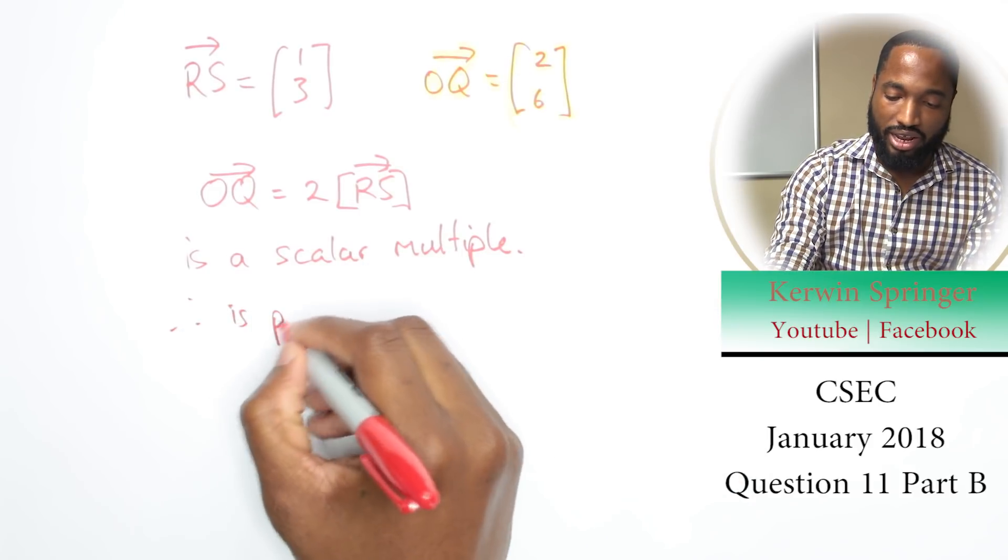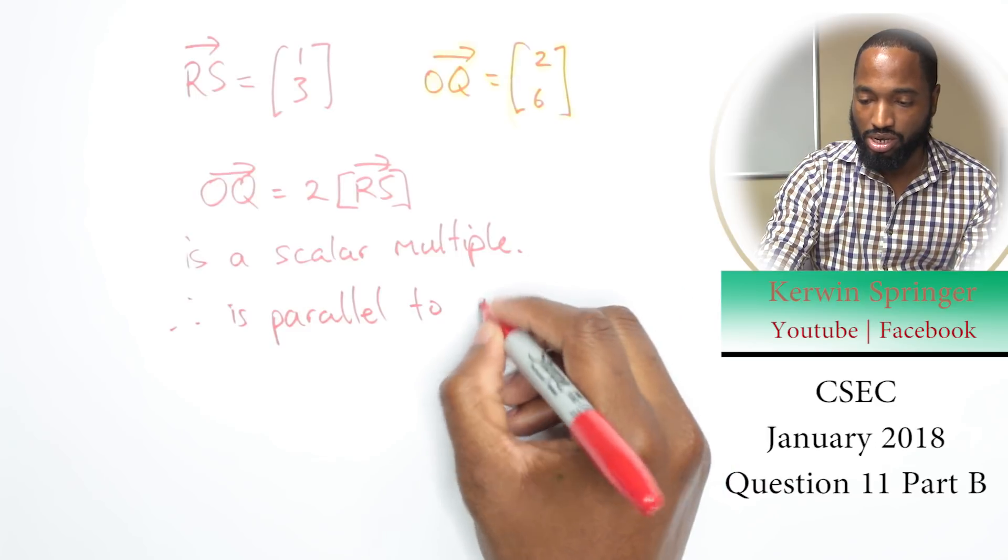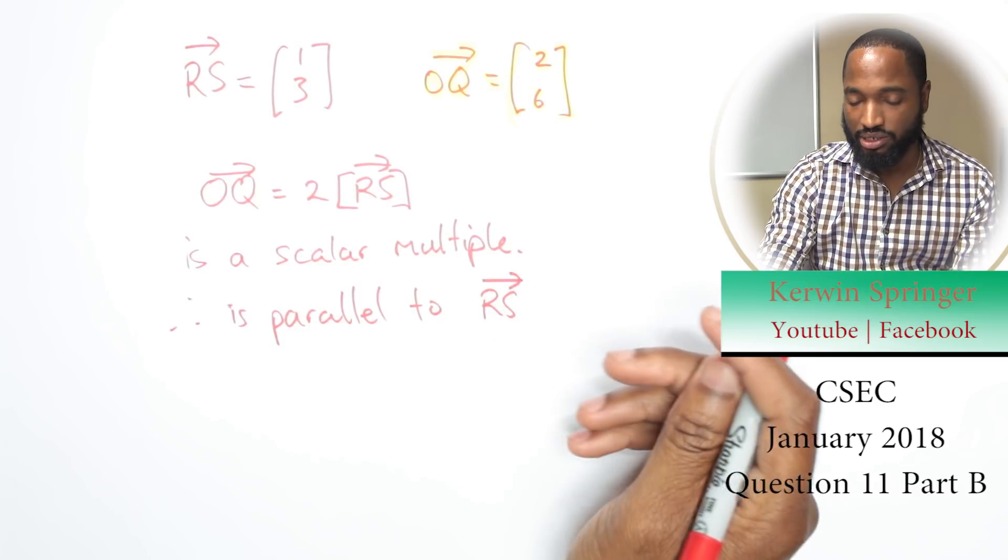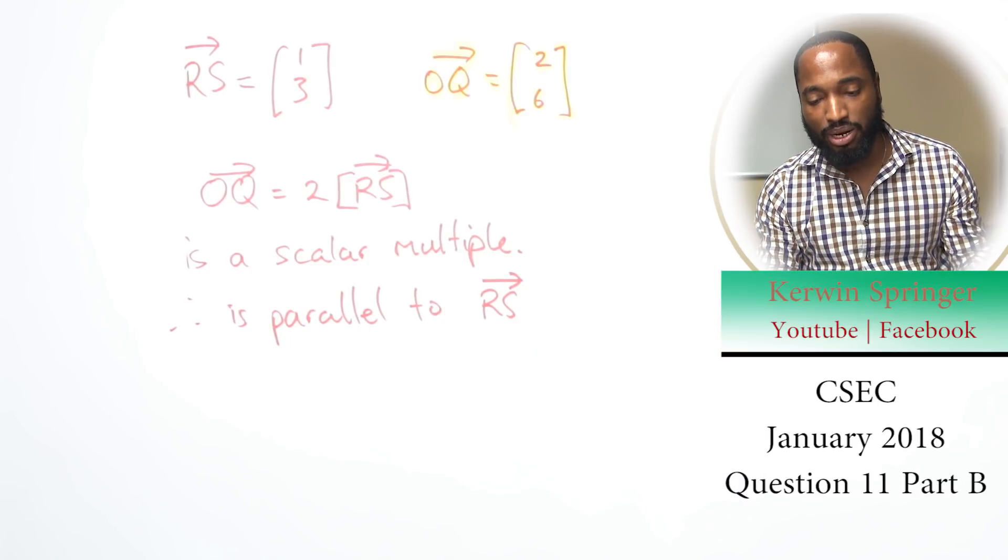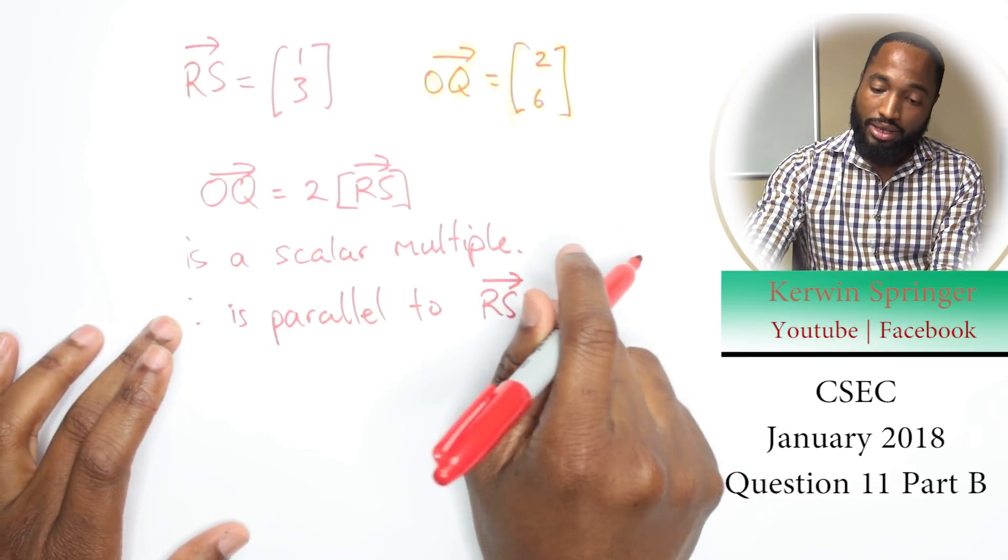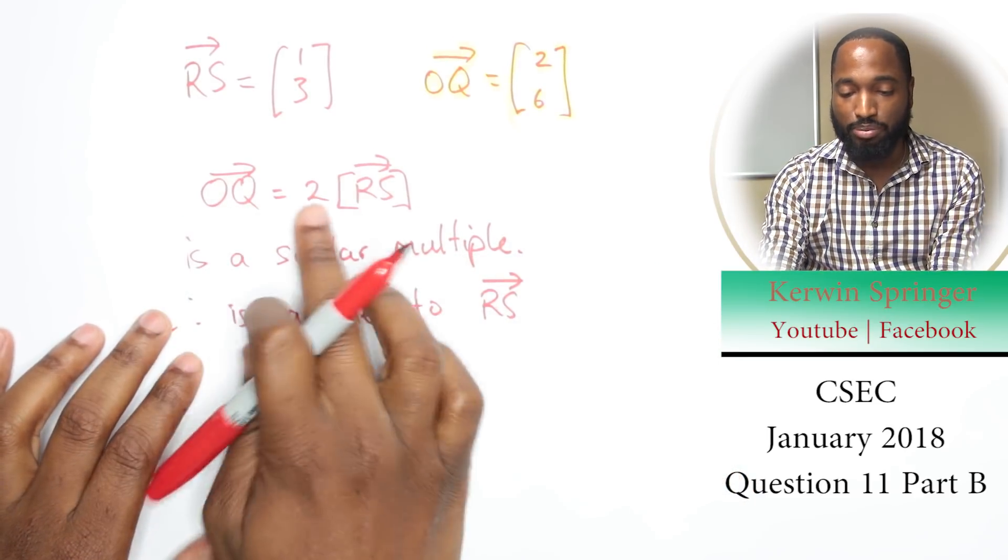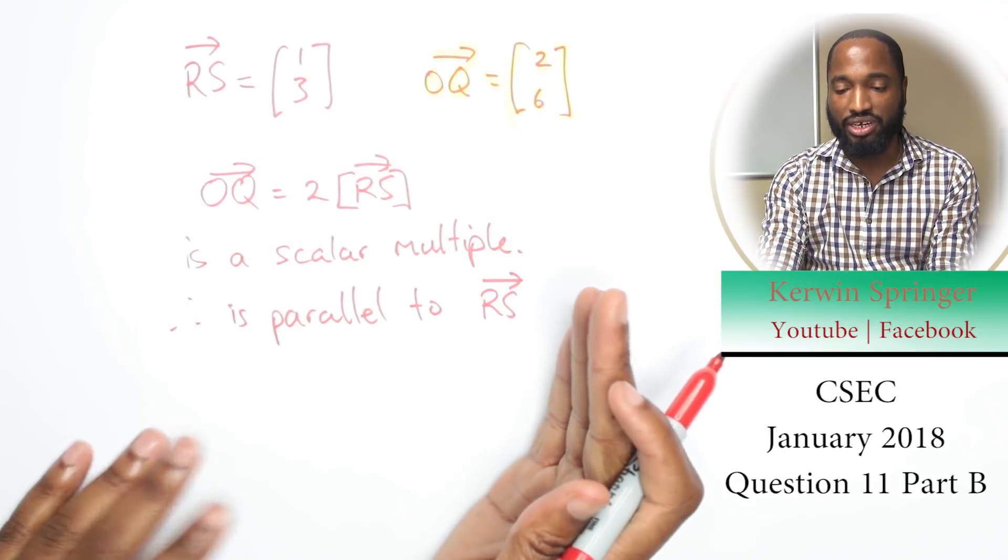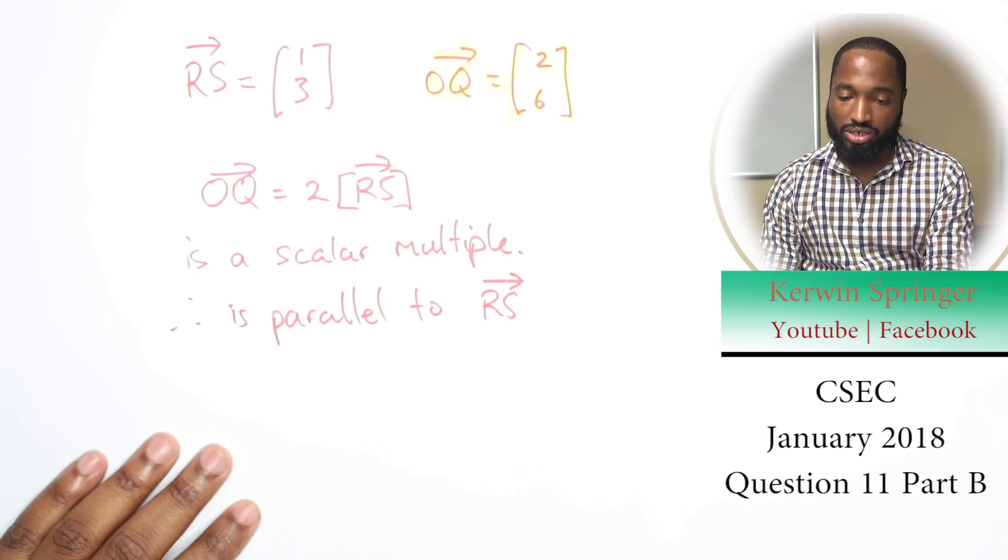Therefore OQ is parallel to RS. Now, if it's parallel or if it's collinear—if it's collinear it means they're all on the same line. If they were on the same line, you'd write the same thing to show it's parallel and also write that they share a point. But these don't share a point, so it's not collinear, it's just parallel. When you're writing that, you are good to go.